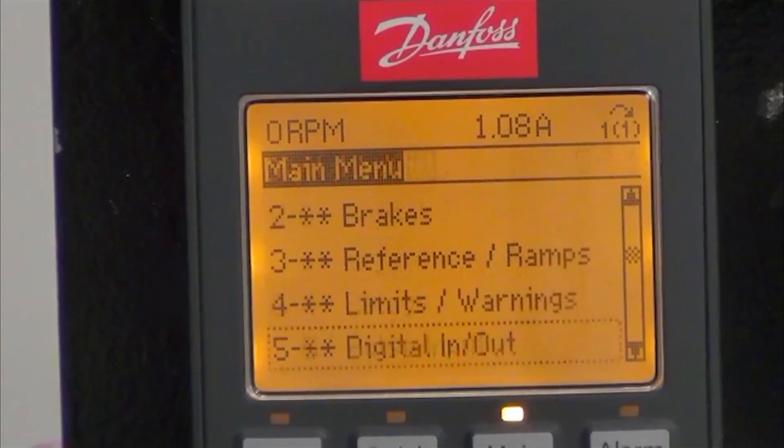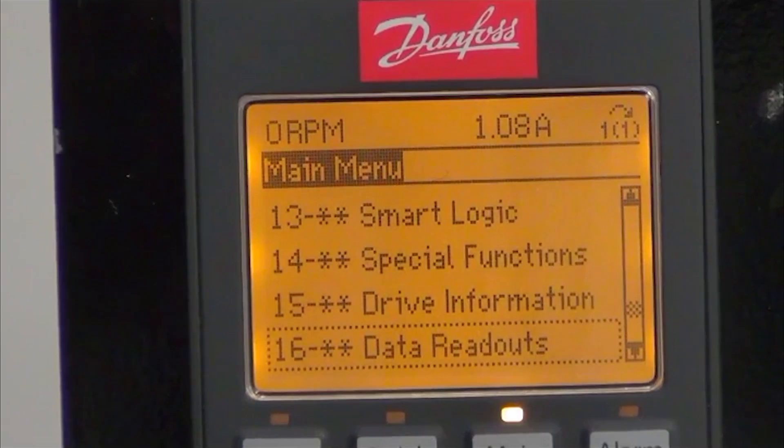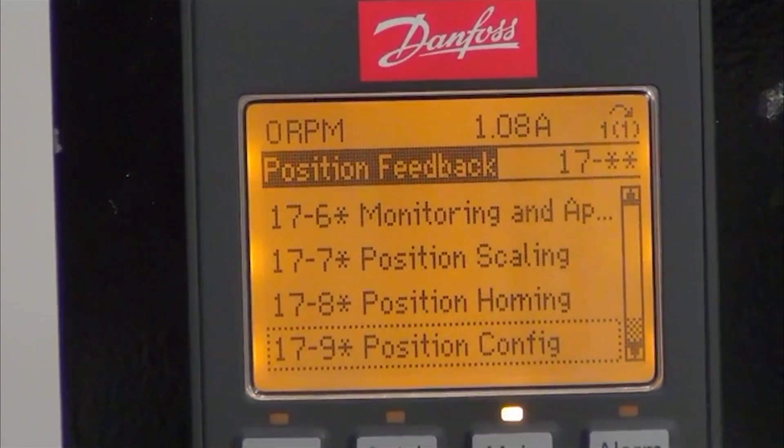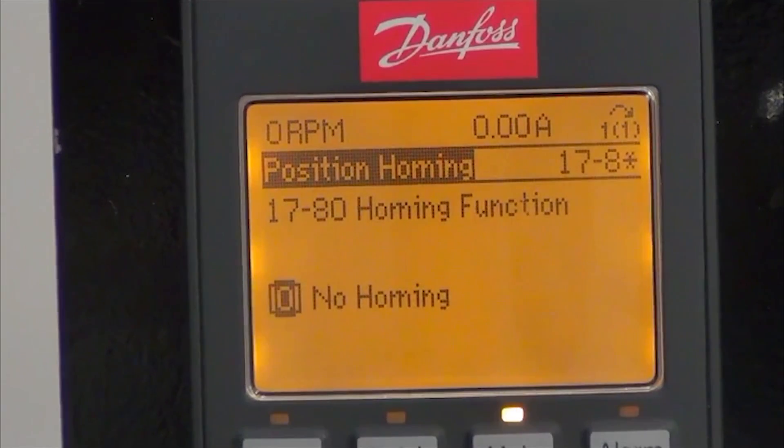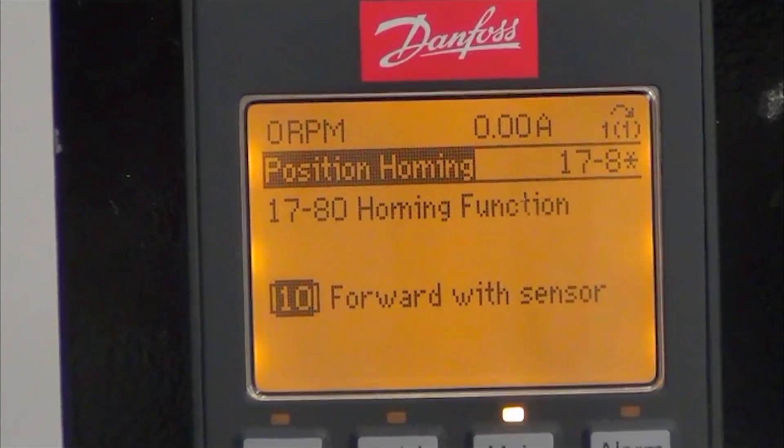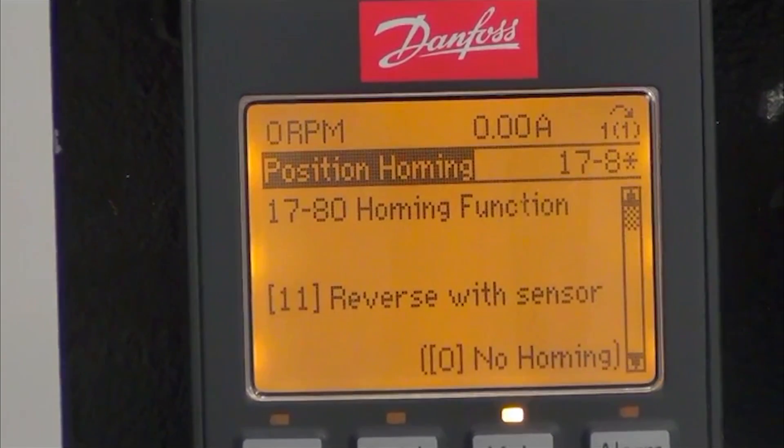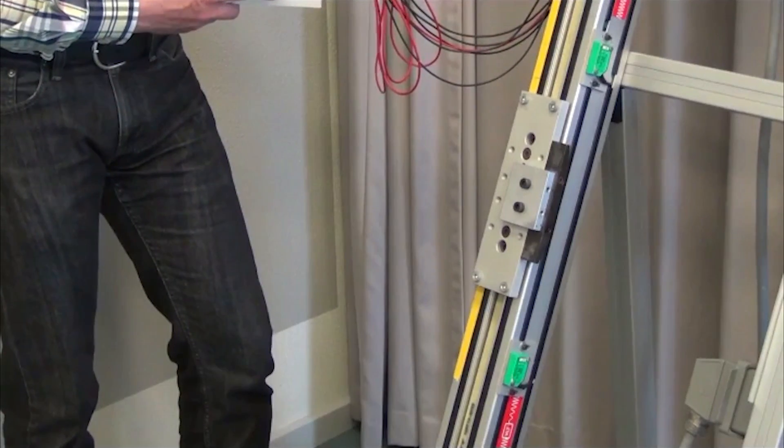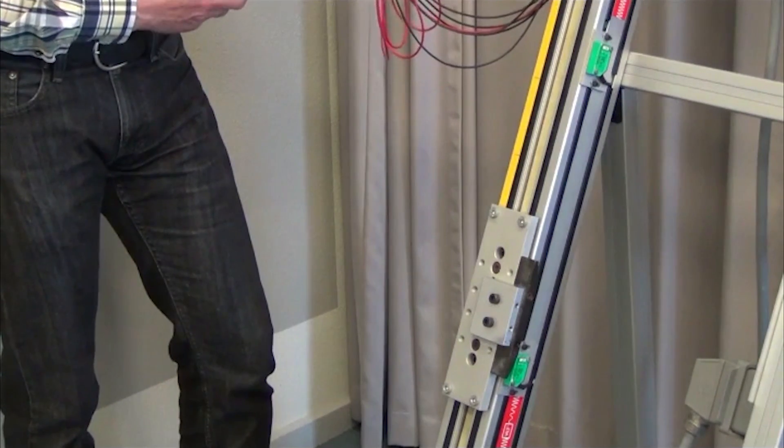Next step is to select the home function. There are several home functions to select between. We need to select the one using the home sensor. So I go to group 17 and select position homing. Right now home function is no homing. I will select reverse with sensor because I know that I need to go in the reverse direction to find the home sensor. So now we are ready to do homing. Now I will activate input 19 to start the home function and it will move, hit the home sensor and stop at the position of the home sensor and define that as zero position.